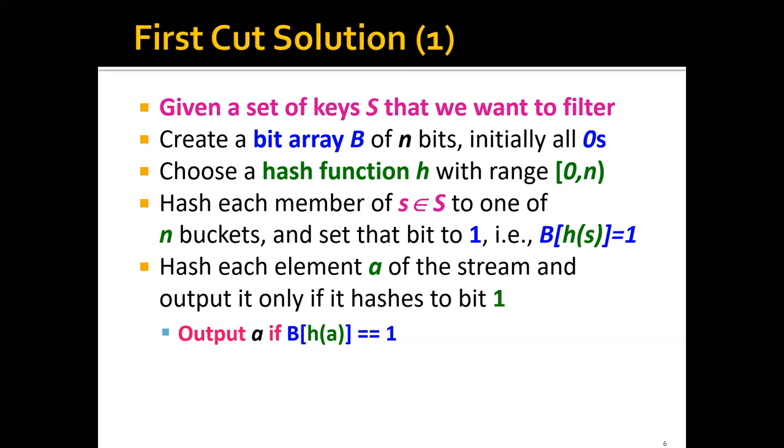And before processing elements coming from the stream, we'll first hash each member s that belongs to this set S to one of the n buckets. So we'll hash it and set the corresponding bits to 1. Formally, we're setting the B[h(s)] entry of the bit array to 1.